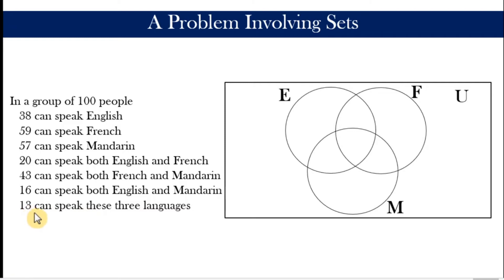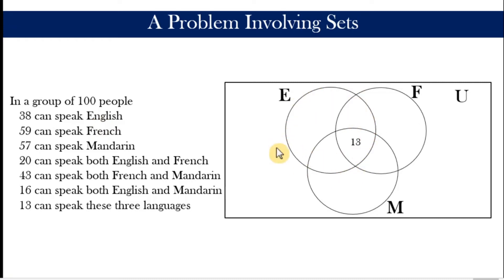It is better to work on the last given data because it is more workable. It states that there are 13 who can speak all three languages. In our Venn diagram, the space overlapped by all three circles represents people who speak all three languages, so we write 13 there. If we started with 38, we would not know exactly where to place it — but working backwards, we are certain those 13 go in the center.